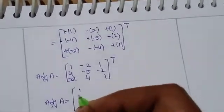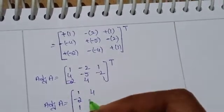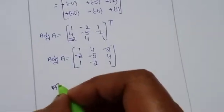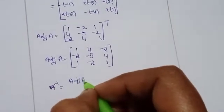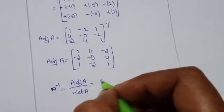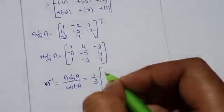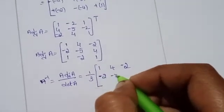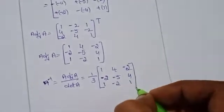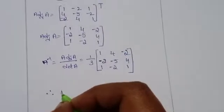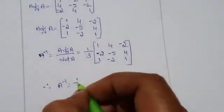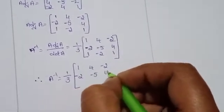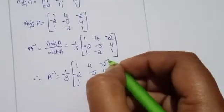So adjoint A equals 1, 4, minus 2, minus 2, minus 5, 4, 1, minus 2, 1. Therefore A inverse equals (1/det A) times adjoint A equals (1/3) times the adjoint matrix, giving A inverse equal to 1, 4, minus 2, minus 2, minus 5, 4, 1, minus 2, 1 divided by 3.